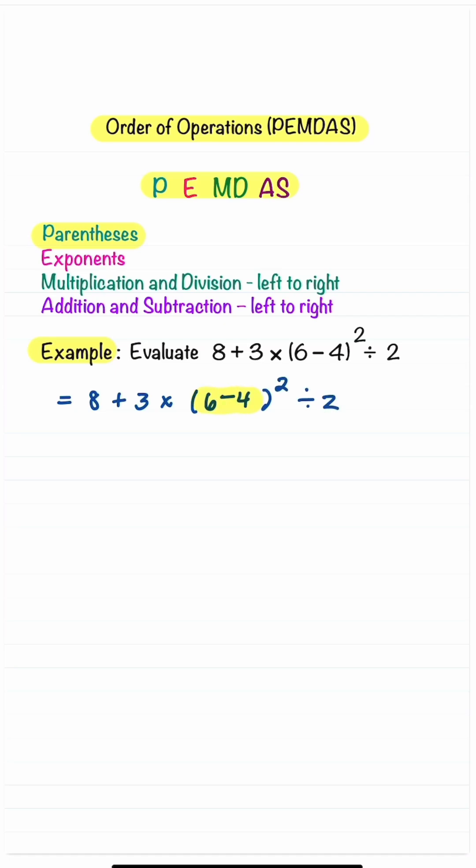Here's what's inside the parentheses that we're going to simplify. This gives us 8 + 3 × (6-4), which is 2, that gets squared, and then we divide by 2.